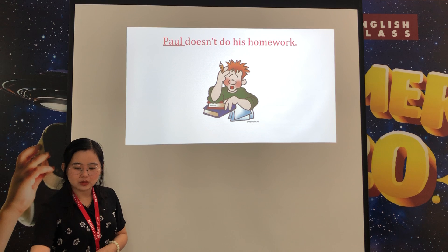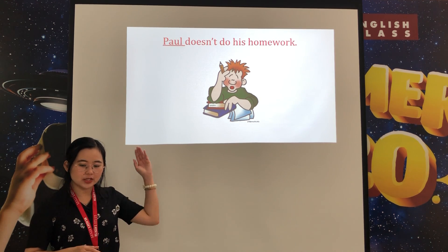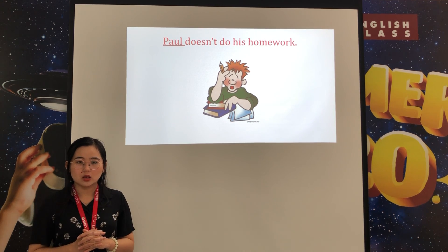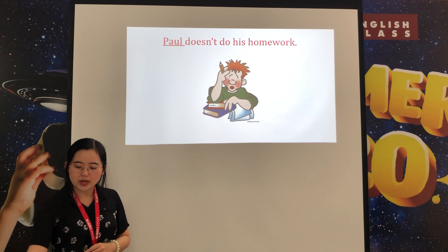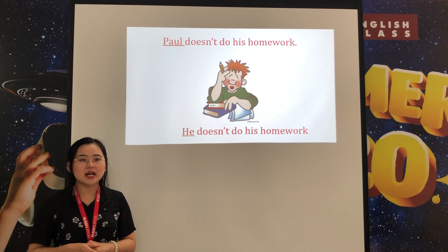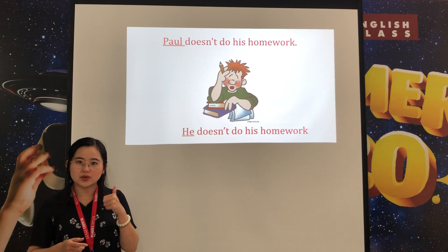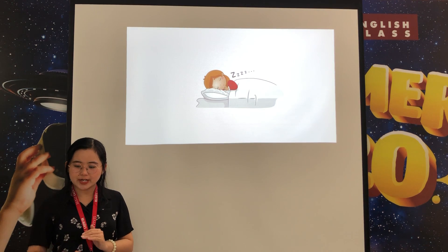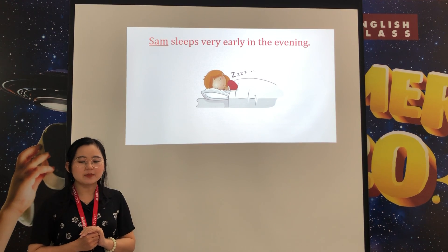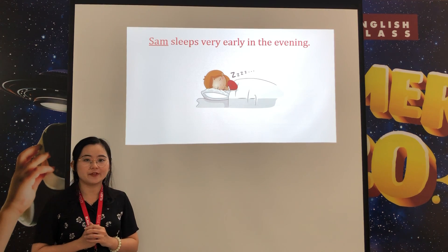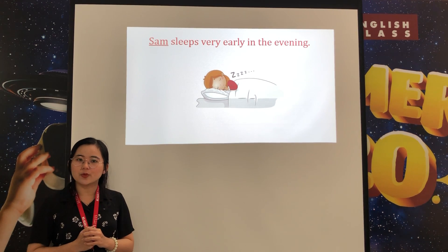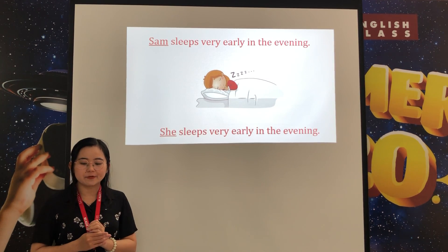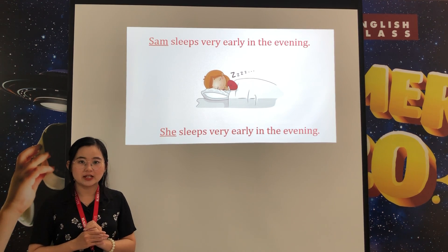Next. Look at the picture — look at him and look at the sentence: 'Paul doesn't do his homework.' This is a man or a boy, so we can say 'he doesn't do his homework.' Next one — this is a girl. Look at the sentence: 'Sam sleeps very early in the evening.' So how can we use subject pronouns here? The answer is 'she sleeps very early in the evening.'